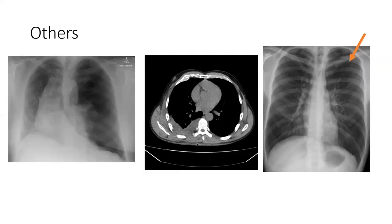How do you differentiate fluid from blood on CT? It's tricky because blood is a fluid on CT. A radiologist may be able to tell, but the history helps: if there's trauma, it's more likely blood; if it's gradual with a cardiac history suggesting cardiac failure, it's more likely transudate fluid.